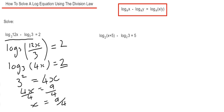Let's move on to example 2 then. This time we've got log base 2 of x plus 5 minus log base 2 of 3 equals 5. So again, use your division law and combine these two logs together by dividing them. We've got log base 2 of x plus 5 over 3 and that's equal to 5.